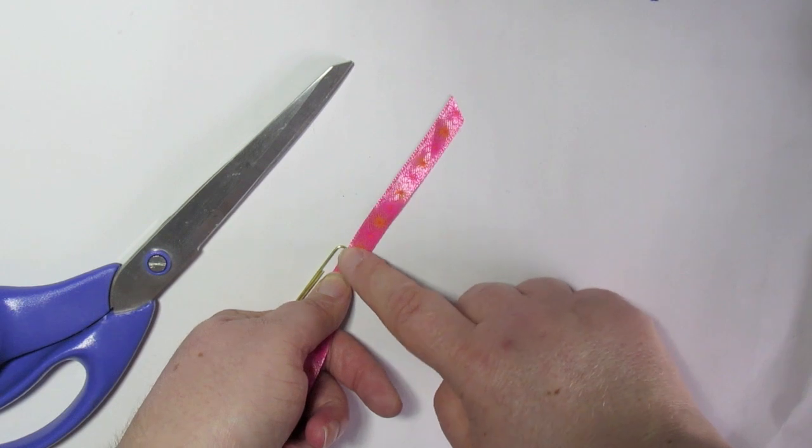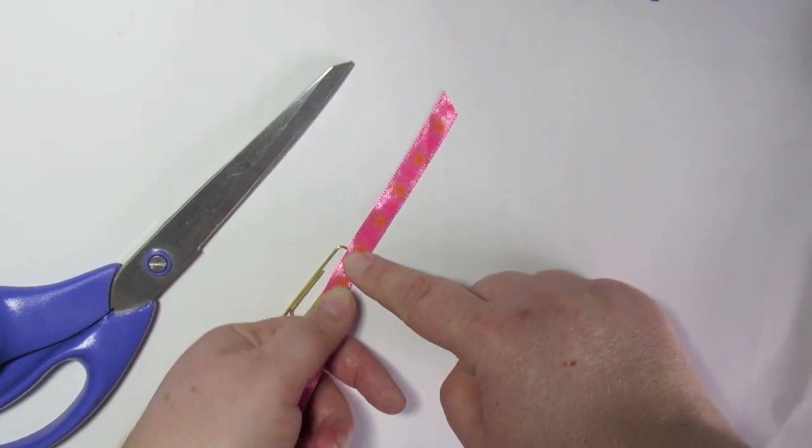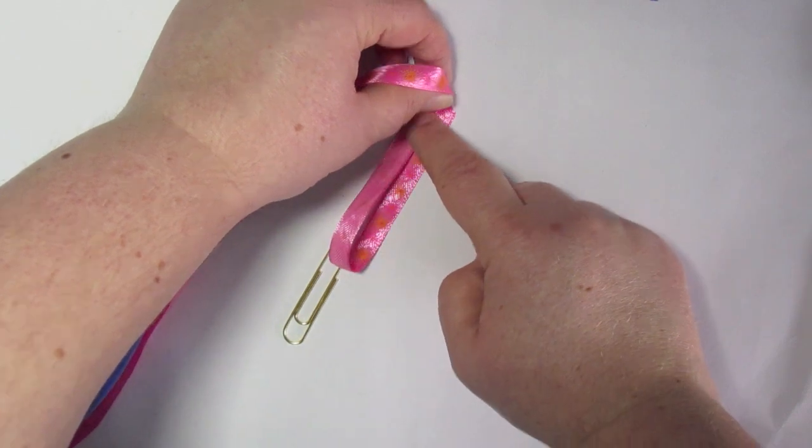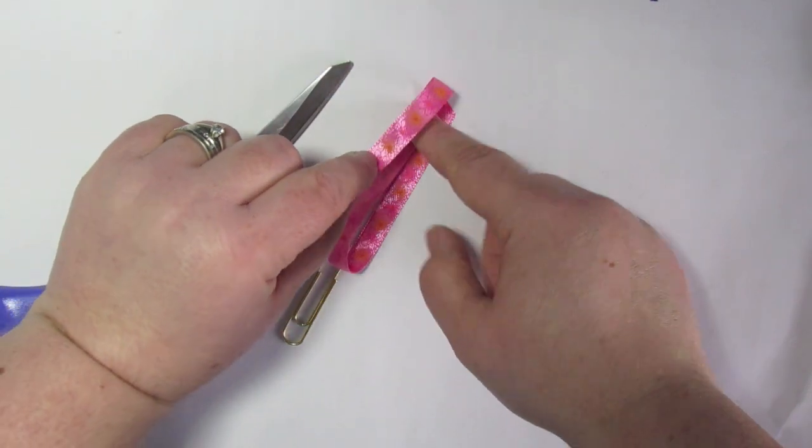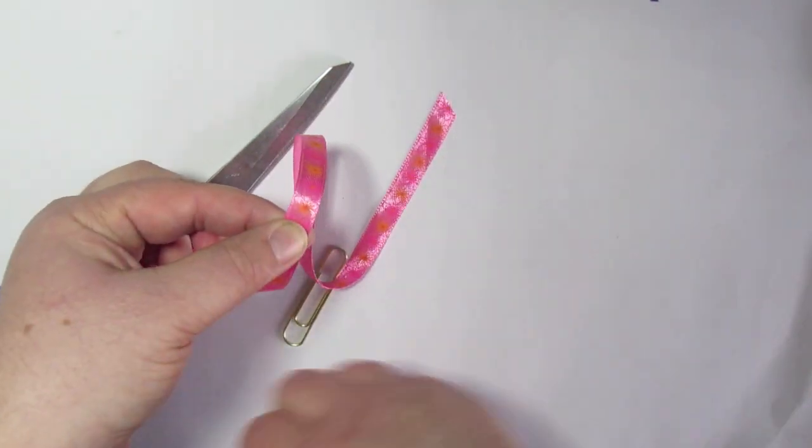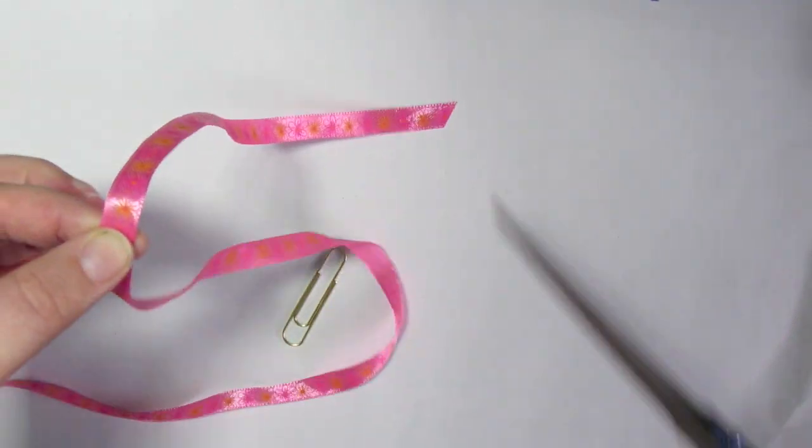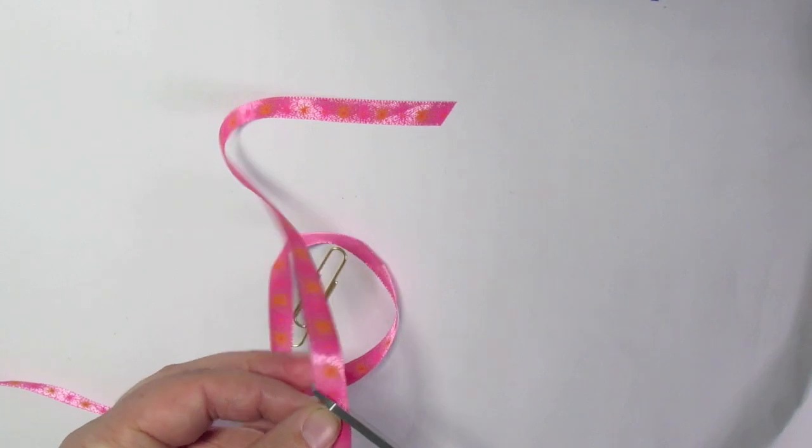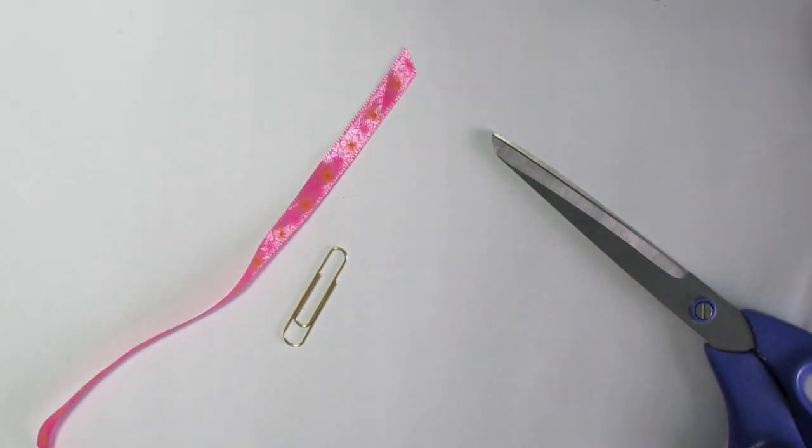So first thing you need to do is work out how much you want your ribbon to stick out the top, and then just do it by two, and then I give it like a little bit extra just to cover the loop, the tie that I'm going to make, and to cover any mishaps. So I just do a diagonal slant so the ribbon doesn't fray.